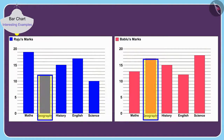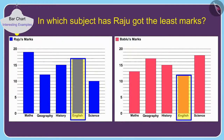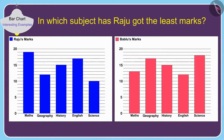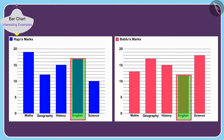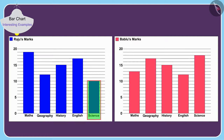'Look Raju, your marks in this subject are the least among the marks we both got.' Children, can you tell in which subject Raju got the least marks? The height of the rectangle in science in Raju's bar chart is the smallest among all bars. Hence, the lowest of all marks — 10 marks — are scored by Raju in science.